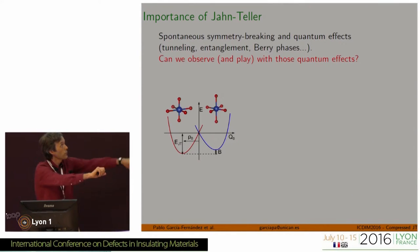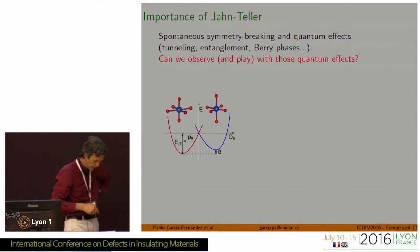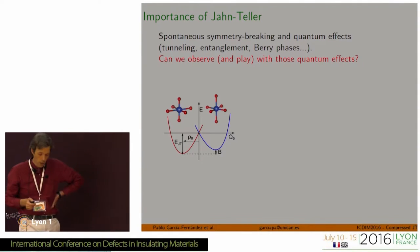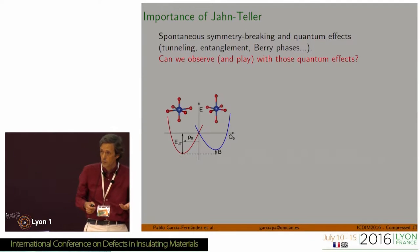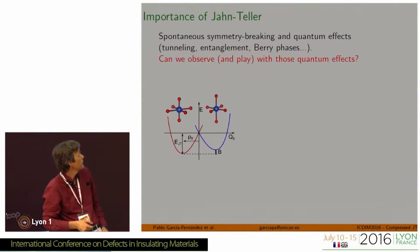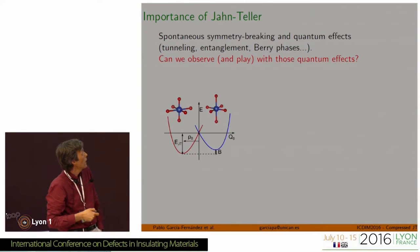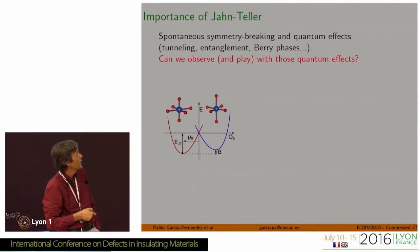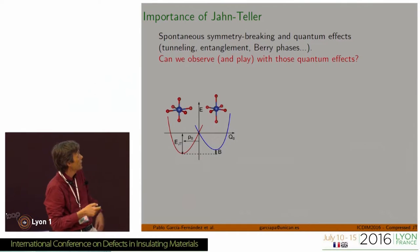Going directly to the problem: what we are doing here is we are very interested in the Jahn-Teller effect. Most of you will know that this is a spontaneous symmetry breaking due to having an orbitally degenerate state. When you have that, a non-octahedral impurity complex, what happens is that the symmetry breaks, and the system becomes tetragonal, and you can have an elongated or a compressed geometry.